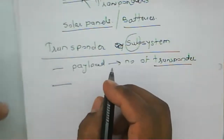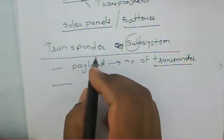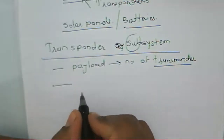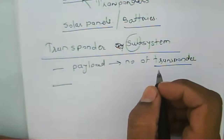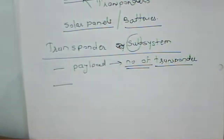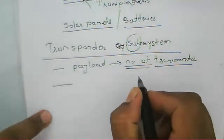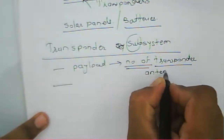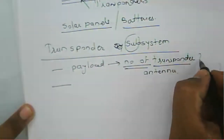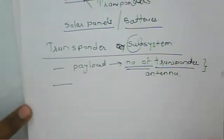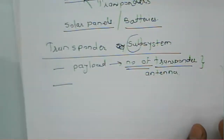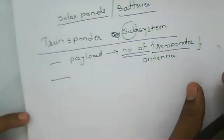A transponder generally carries a specific payload, and this payload is useful for satellite communication. The number of transponders used in a given satellite determines the satellite's capacity. Based on the transponder count and the antenna system, the satellite applications vary. There are various types of transponders with different roles.